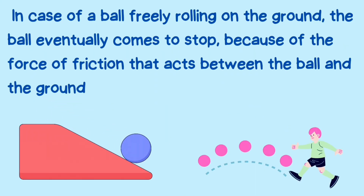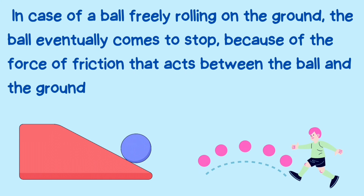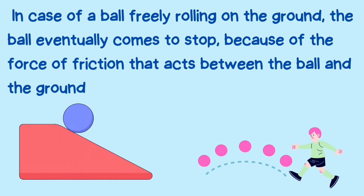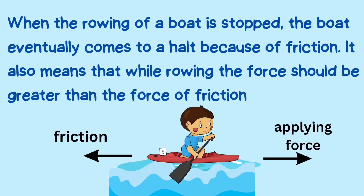In the case of a ball freely rolling on the ground, the ball eventually comes to a stop because of the force of friction that acts between the ball and the ground. When the rowing of a boat is stopped, the boat eventually comes to a halt because of friction. This also means that while rowing, the force applied should be greater than the force of friction.